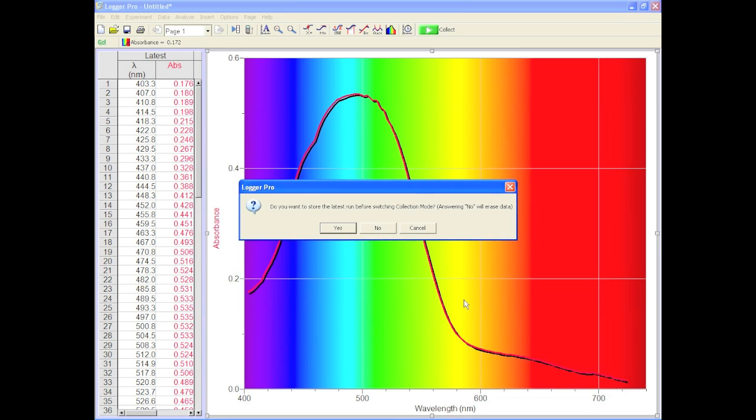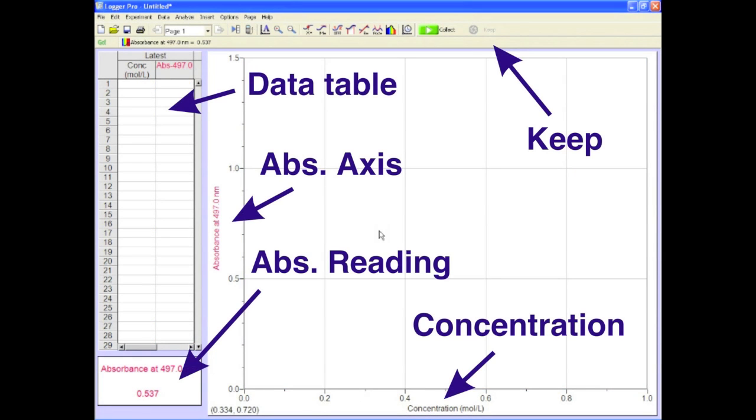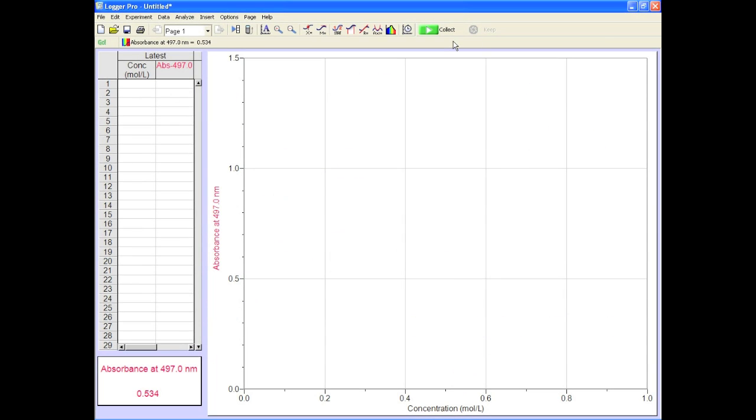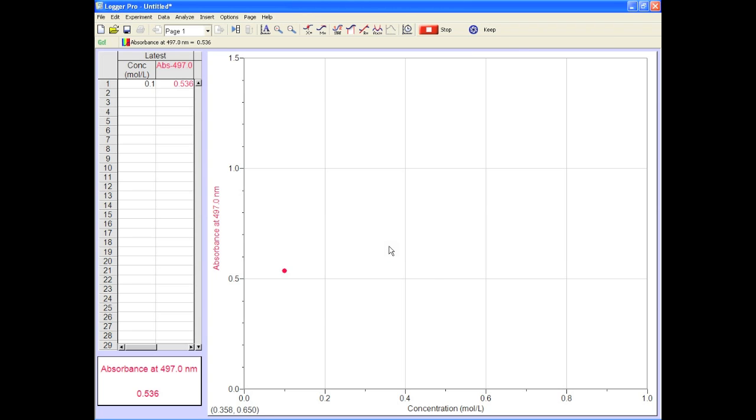You can save your data or discard it. Whatever works for you. Nice. Now you're ready to roll. Check out these areas of the screen, they're important, especially the Keep button. Now press Collect and notice the Keep button is lit up. Give it a push and type in the concentration of standard you have in the spec. It should still be your highest one. OK. Notice that the point on the graph moves accordingly.